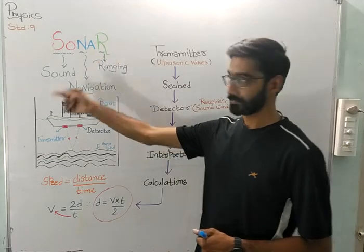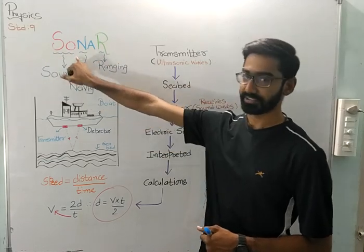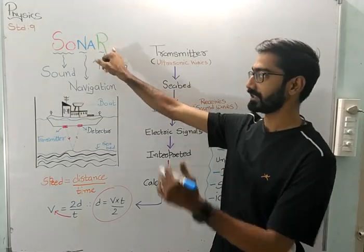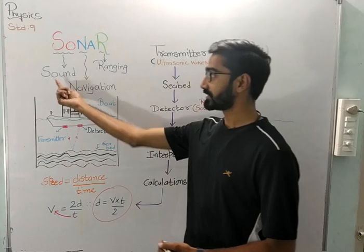SONAR has five different letters where SO stands for sound, N stands for navigation, A stands for and, and lastly R stands for ranging. So SONAR is abbreviated as sound, navigation and ranging.